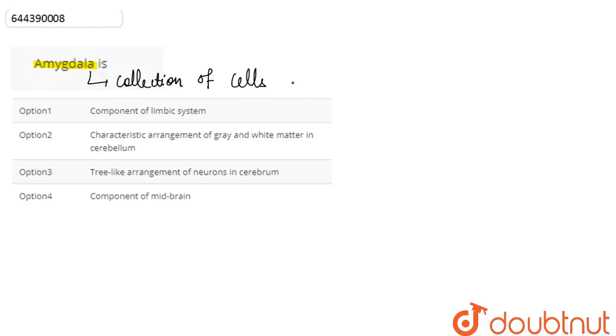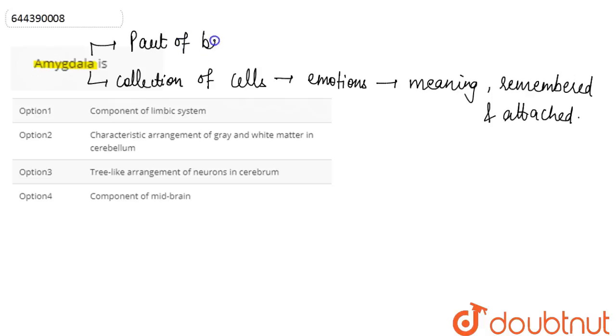This is where emotions are given meaning. The emotions are given the meaning, remembered, remembered and attached to association and response to them. So the amygdala is considered to be a part of the brain's limbic system. It is basically a part of brain's limbic system because limbic system, as we have discussed.